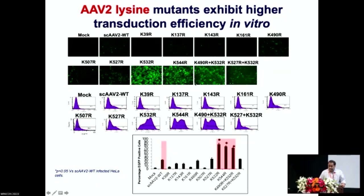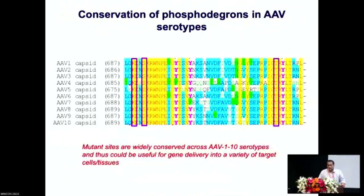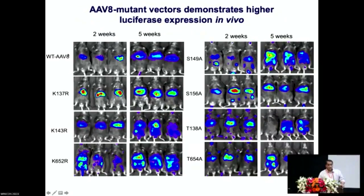When you use the unmodified virus, this is the level of reporter gene expression that you get in a cell line. When you use modified viruses — the lysine mutants that we generated — gene expression clearly goes up. The same was tested in animal models, where we had about a three- to four-fold increase in hepatic gene expression. What was encouraging was that these residues we were modifying in the AAV2 serotype were conserved across multiple AAV serotypes, meaning we could apply this approach to other serotypes as well.